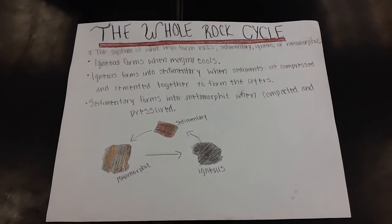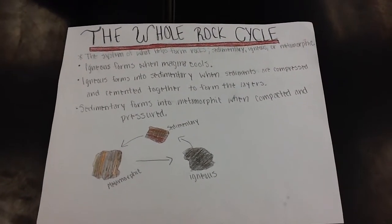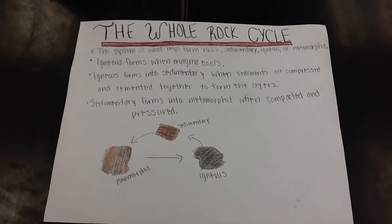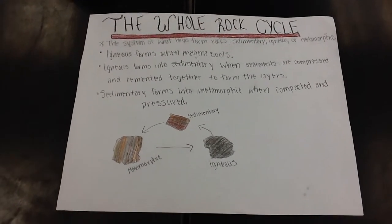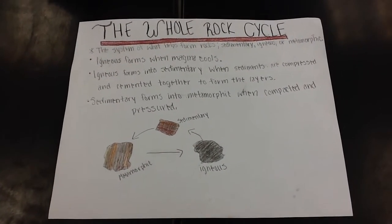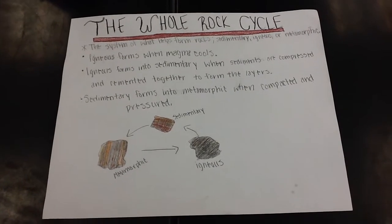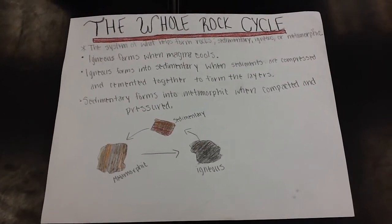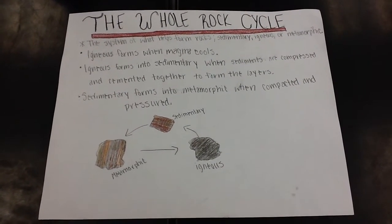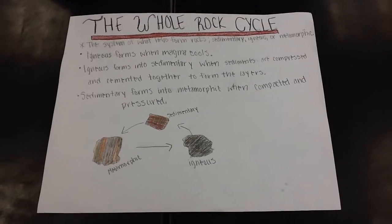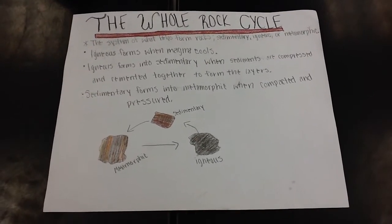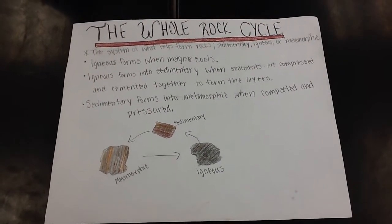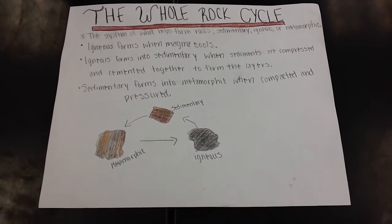The system of what helps form rocks is the whole rock cycle: sedimentary, igneous, or metamorphic. Igneous forms when magma cools. Igneous forms into sedimentary when sediments are compressed and cemented together to form layers. Sedimentary forms into metamorphic when compacted under pressure.